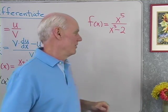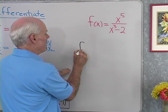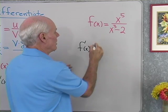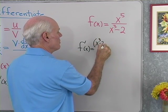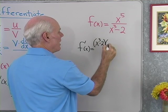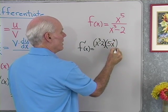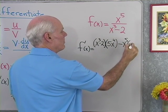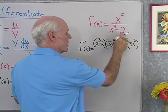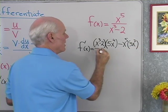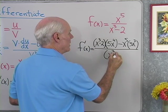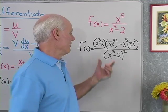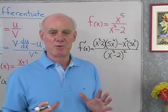So to find the derivative, we'll use the quotient rule. f prime of x is: bottom, x cubed minus 2, times the derivative of the top, 5x to the fourth, minus the top, x to the fifth, times the derivative of the bottom, 3x squared, all divided by that denominator, x cubed minus 2, quantity squared. So that's the derivative — I've applied the quotient rule and have my derivative.